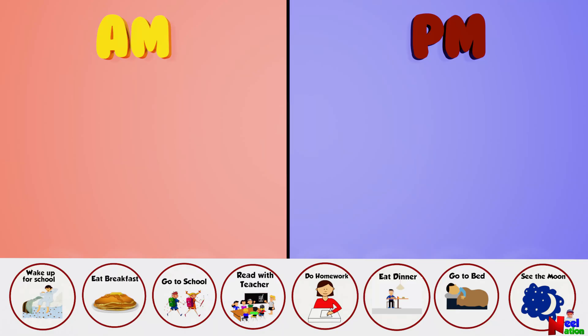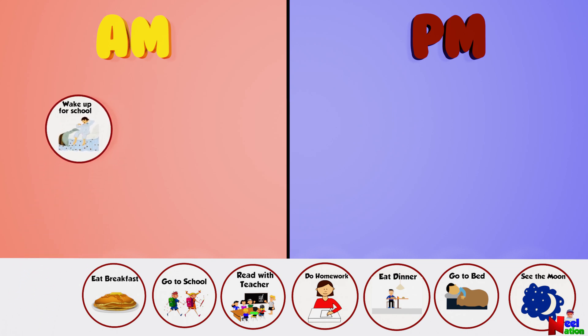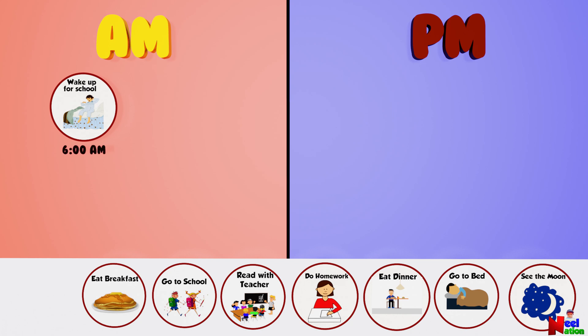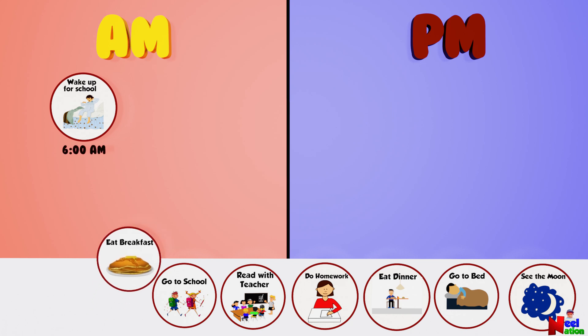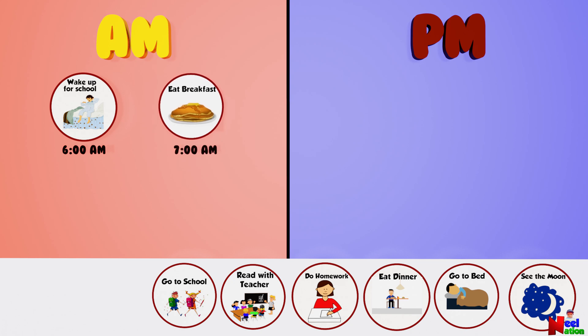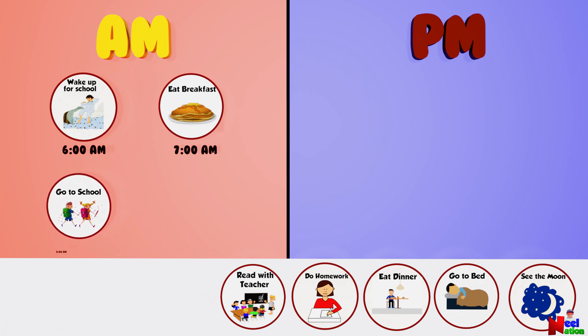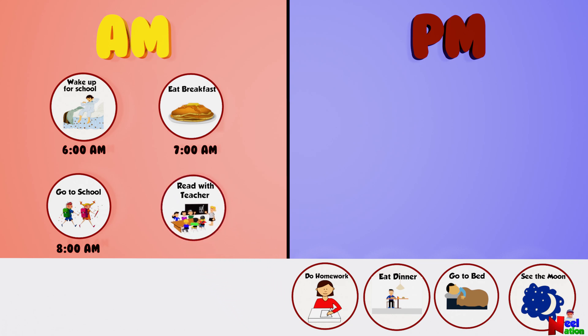You do lots of activities in a day. Let's sort them by AM and PM. When do you wake up for school? In the AM — at 6 AM. When do you have breakfast? At 7 AM. When do you go to school? At 8 AM. When do you read with your teacher? At 10 AM.